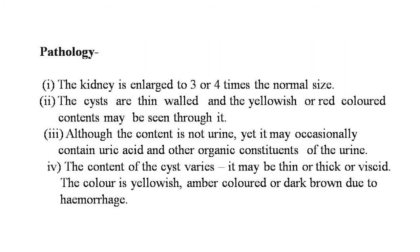Pathology: this is mostly a bilateral condition — 95% — although one side may be more advanced. The kidney is enlarged to 3 or 4 times normal size. The cysts are thin-walled, and yellowish or red color content may be seen through them. Although the content is not urine, it may occasionally contain uric acid or other organic constituents of urine. The content varies — it may be thin, thick, or viscous — and is yellowish, amber, or dark brown due to hemorrhage.